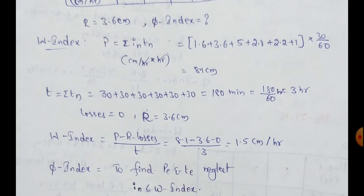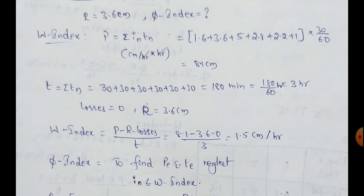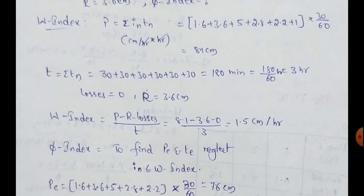Double index equal to P, precipitation minus runoff minus losses by time. We have to find out, 8.1 minus runoff, 3.6 minus losses by time value, 3 hours. By 3. So, total, we get 1.5 cm per hour.